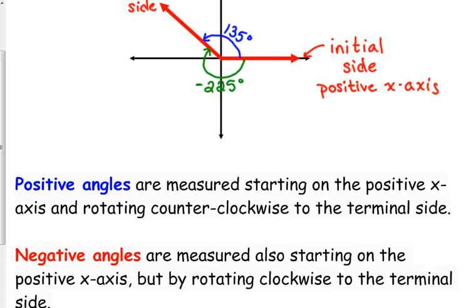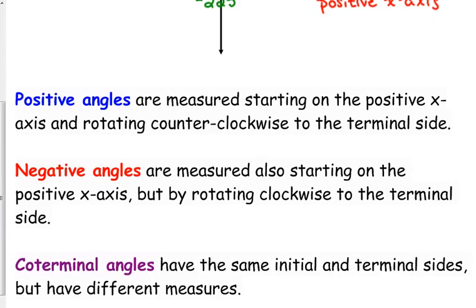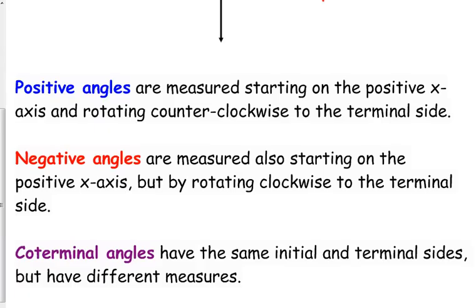Those two together make up an entire circle, so I took 135 away from 360. But 135 degrees and negative 225 degrees are the exact same angle. Even though they have different measurements — one positive, one negative — they are the exact same angle. That's what we call co-terminal angles: they have the same initial and terminal sides but different measures. You end up in the same spot; you just went different directions to get there.